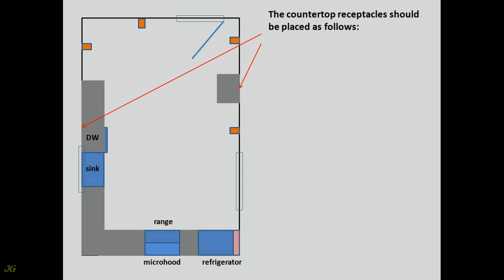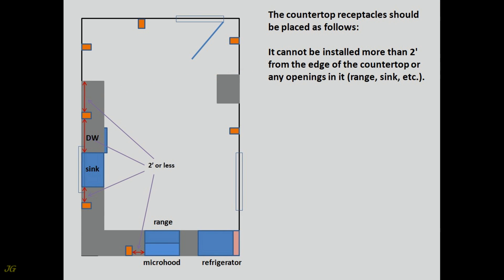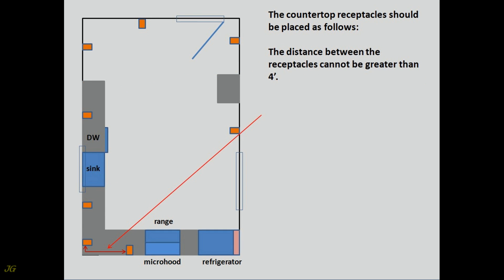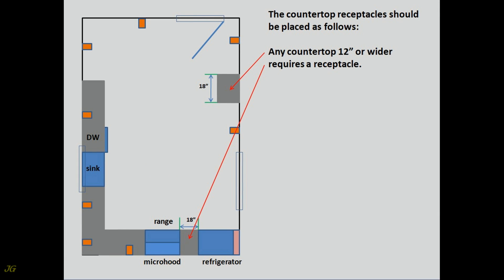Countertop receptacles should be placed as follows: they cannot be installed more than 2 feet from the edge of the countertop or any openings in it — range, sink, etc. The distance between receptacles cannot be greater than 4 feet. Any countertop 12 inches or wider requires a receptacle.